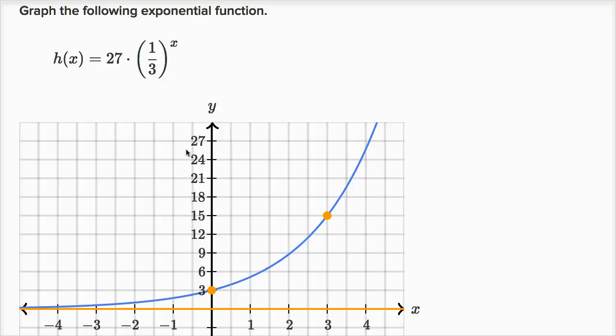This is from the Graph Basic Exponential Functions on Khan Academy, and they ask us to graph the following exponential function. They give us the function h of x equals 27 times one third to the x, so our initial value is 27, and one third is our common ratio. It's written in standard exponential form.